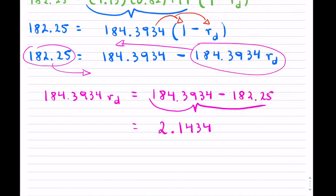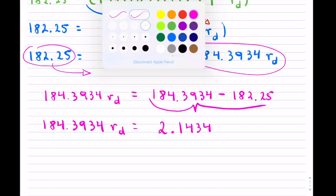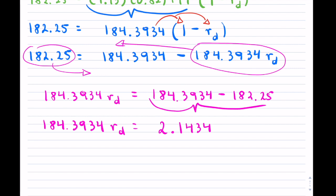So I have that actually stored there already. So minus 182.25 equals and that's going to be 2.1434. And now on the left hand side there's nothing to do as of yet. So this is what I have.